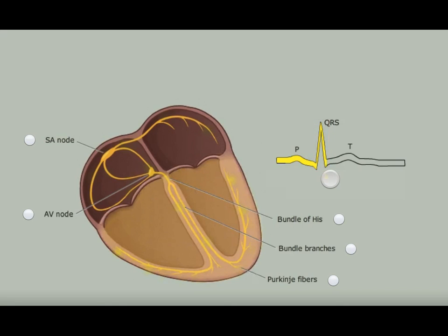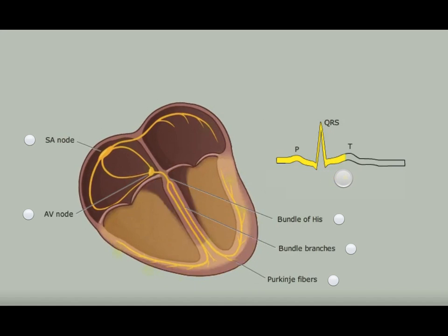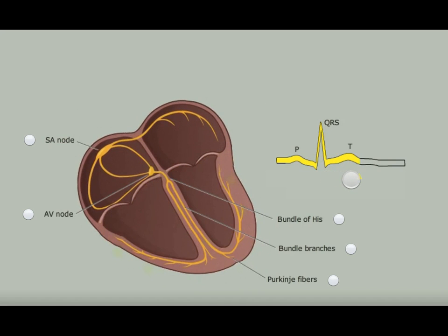The repolarization of the ventricles is shown by the clearing of the yellow shading on the heart. This repolarization is seen as the T wave on the ECG.